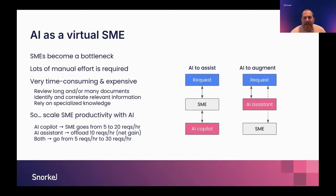So if you're trying to increase productivity and scale your business, people are looking at AI. I see two examples: AI co-pilots and AI assistants. For co-pilots — similar to GitHub Copilot for developers — an SME at a call center handling five requests an hour might handle 20 with a co-pilot. The other path is an AI assistant as your frontline SME, directly handling requests that would have gone to a person. Combined, you could go from five to 30 requests per hour.